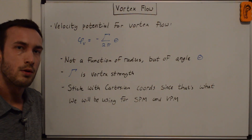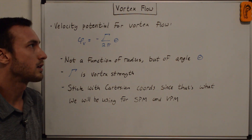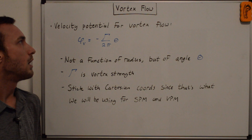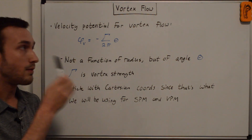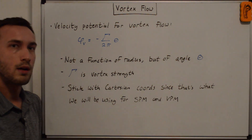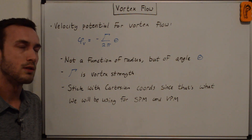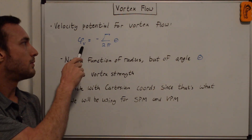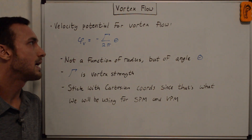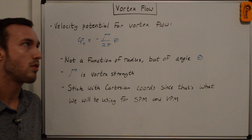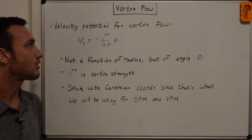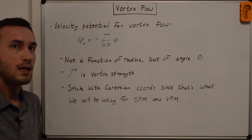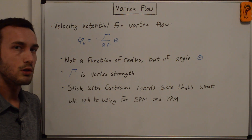In this video we're going to go through another elementary potential flow called vortex flow. As with my source sink flow, we're going to start with just the velocity potential — we're not going to derive that — and then we're going to go through and compute the Cartesian velocity components vx and vy. The velocity potential for vortex flow is phi sub v (v for vortex) is equal to negative gamma over 2 pi times theta, where gamma is the vortex strength. Note that there is a negative sign here because of the way that we defined gamma or the circulation in another video.